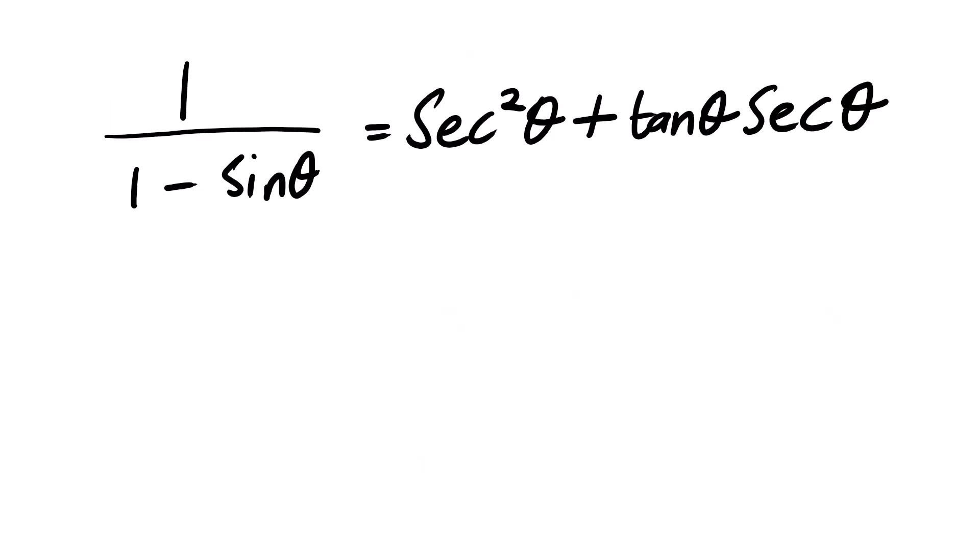The question is saying: prove the identity. So what we need to do is prove that the left hand side is equal to the right hand side. We need to look at the most complex side and then try to simplify it to be exactly the same as the other side. In this case, we can see that the right hand side is actually more complex than the left hand side.